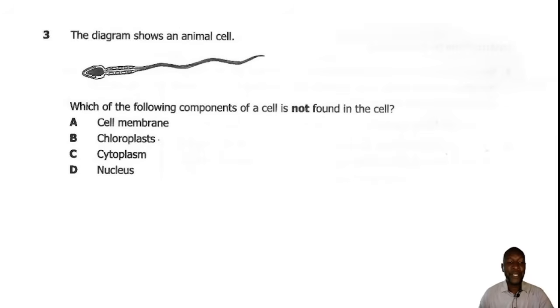Question 3. The diagram shows an animal cell. Which of the following components of a cell is not found in the cell? So we have a sperm cell here, which is an animal cell. Animal cells will not contain the cell wall, the chloroplast, as well as the vacuole. So the correct answer is B, chloroplast.